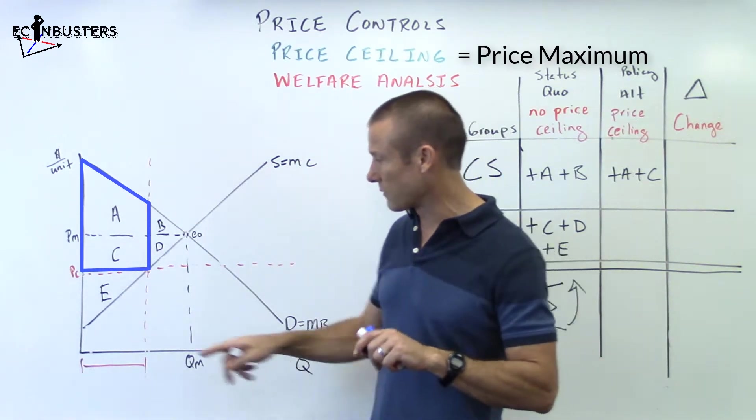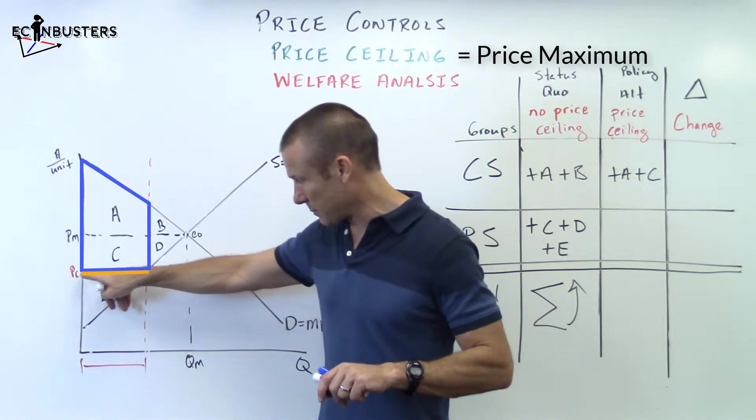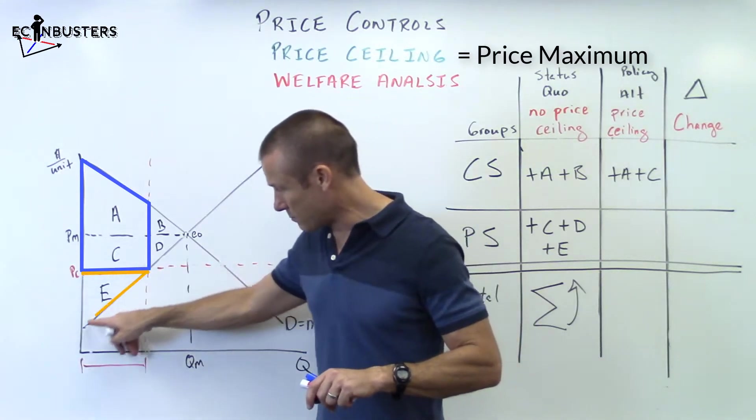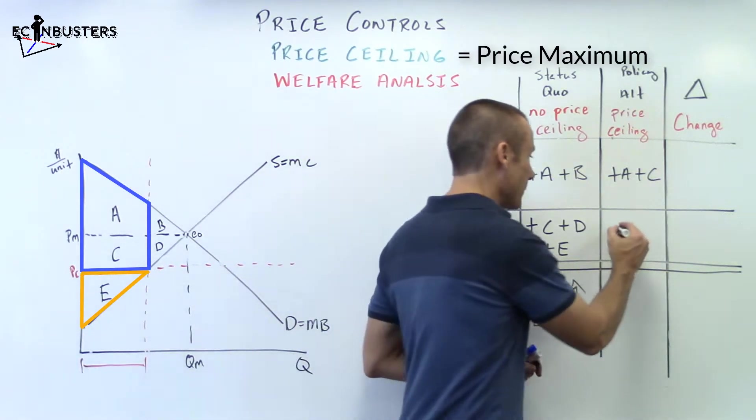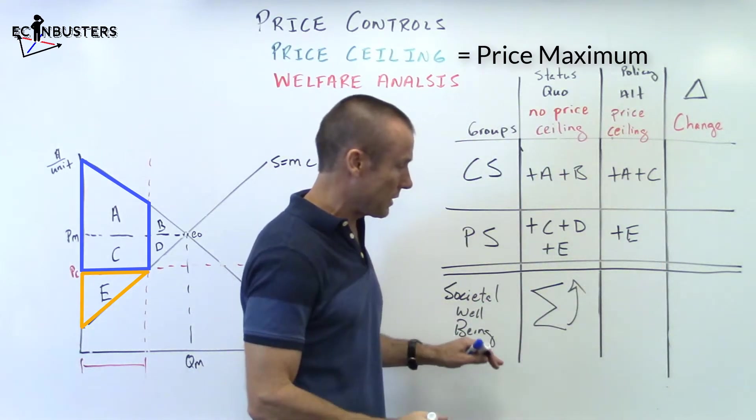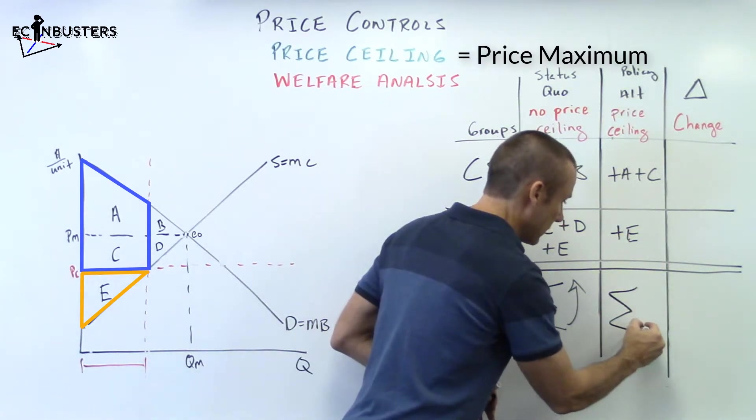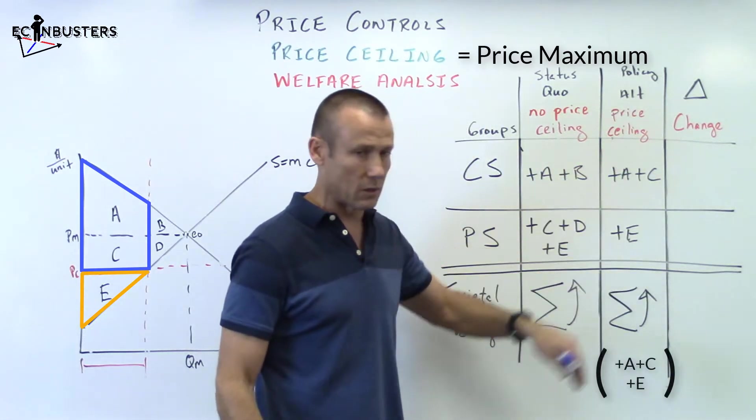Producer surplus, much more straightforward. Still, same premise, right? Price per unit revenue, marginal cost, it's plus E. As far as the societal well-being, we just write sigma and point up. We're just summing those up.